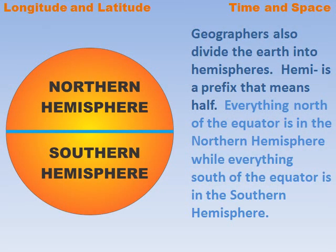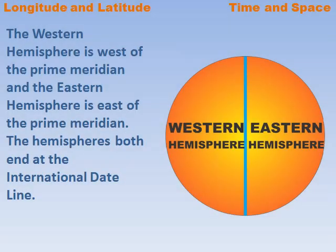Geographers also divide the Earth into hemispheres. Hemi is a prefix that means half. Everything north of the equator is in the Northern Hemisphere, while everything south of the equator is in the Southern Hemisphere. The Western Hemisphere is west of the Prime Meridian, and the Eastern Hemisphere is east of the Prime Meridian.